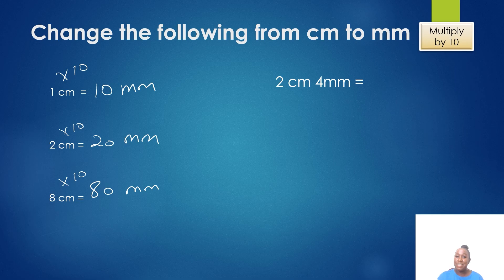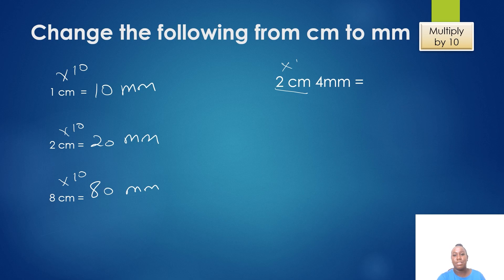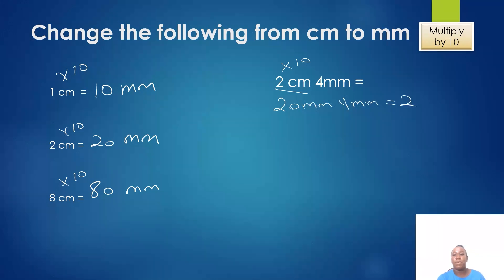Now look at this. I have 2 centimeters and 4 millimeters and I would like to change it to millimeters. The first thing I will do is change my 2 centimeters to millimeters so I can determine the total millimeters I have. To change 2 centimeters to millimeters I need to multiply by 10, so I'm going to have 20 millimeters plus 4 millimeters, which gives me a total of 24 millimeters.